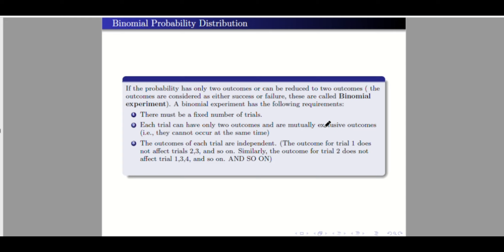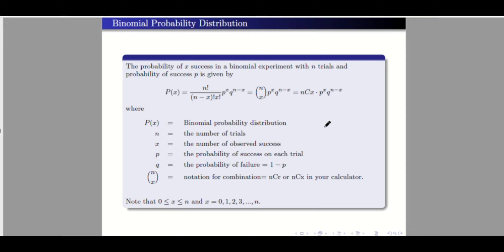The outcomes of each trial must be independent, meaning the outcome for trial one cannot affect any other trial. Trial two cannot affect trials one, three, and so on — each can stand alone. Lastly, the probability of success is the same for each trial. For example, when you toss a coin, the probability of getting a head is always one-half.